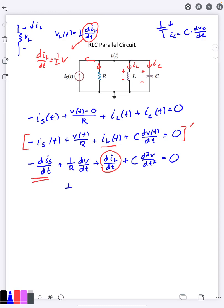So I'd have one over R dv/dt plus one over L times v of t, right, that's the diL is one over L times v, plus C d squared v/dt squared equals dis/dt.